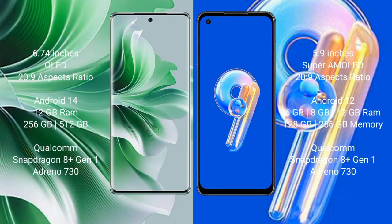Oppo Reno 11 Pro comes with a 6.74-inch OLED display and a 20:9 aspect ratio. Oppo Reno 11 Pro runs on the Android 14 operating system. Asus Zenfone 9 runs on the Android 12 operating system. Oppo Reno 11 Pro comes with 12GB RAM.